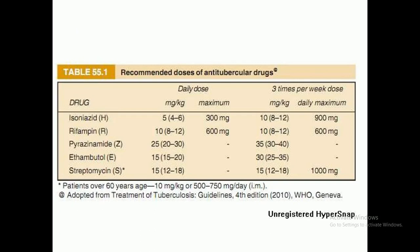Now let's look at Table 15.5 — recommended doses of anti-tubercular drugs. The table shows drug name, milligram per kg body weight, daily maximum dose, and three-times-per-week dose. Isoniazid, represented by H, is given at 4 to 6 mg/kg body weight with a maximum daily dose of 300 mg, and 8 to 12 mg/kg for three-times-per-week dosing with a maximum of 900 mg.